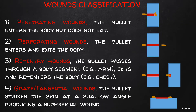Gunshot wounds can be classified as: penetrating wounds, where the bullet enters but does not exit the body; perforating wounds, where the bullet enters and exits the body; re-entry wounds, where the bullet passes through a body segment like the arm, exits, and then re-enters the body; and grazed or tangential wounds, caused by a bullet that strikes the skin at a shallow angle, producing a superficial wound.